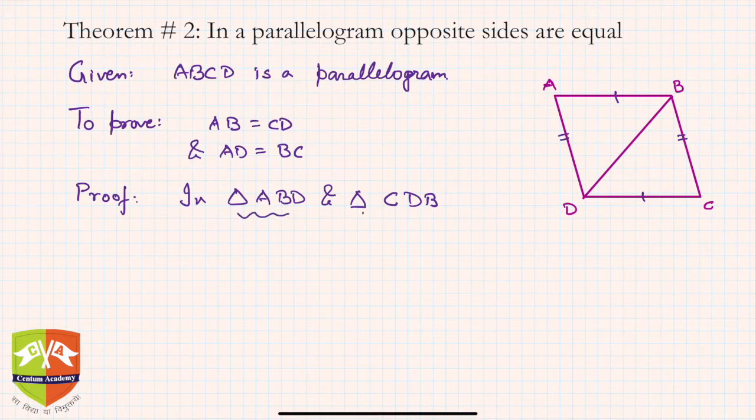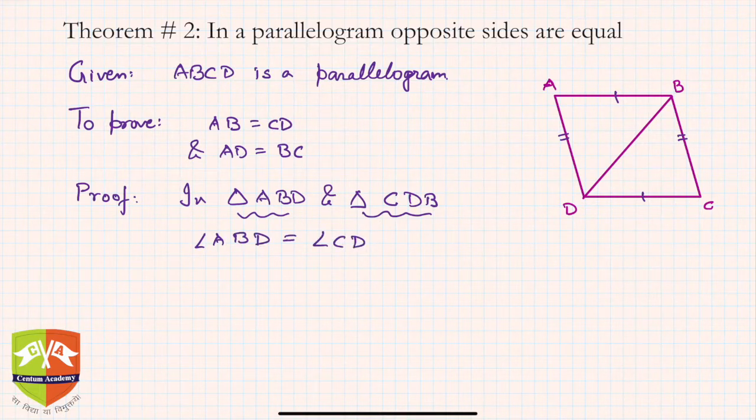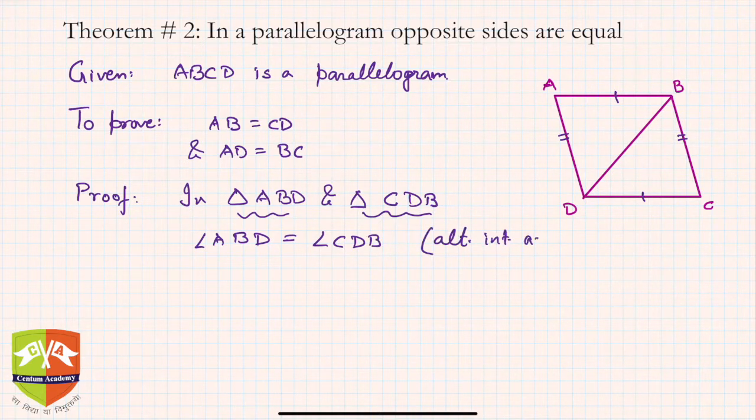Now in triangle ABD, what can I say? I can say angle ABD is equal to angle CDB. Why? They are alternate interior angles, because AB is parallel to CD because it's a parallelogram.